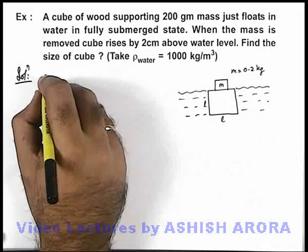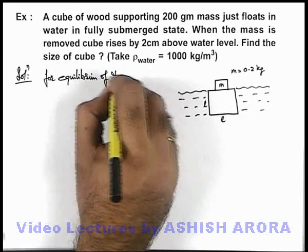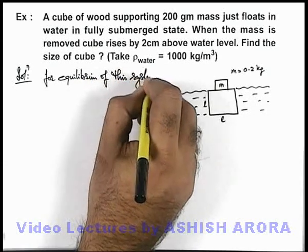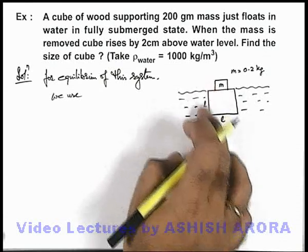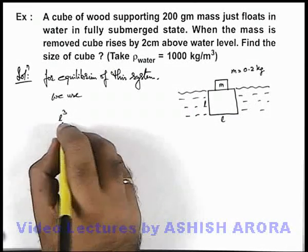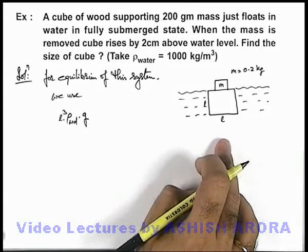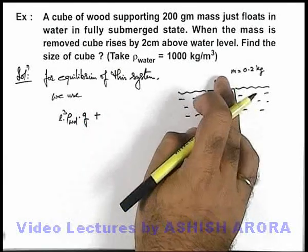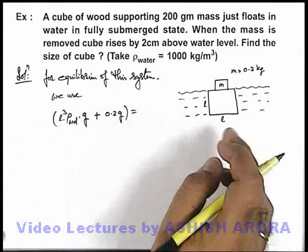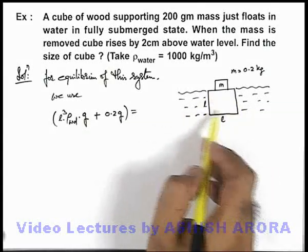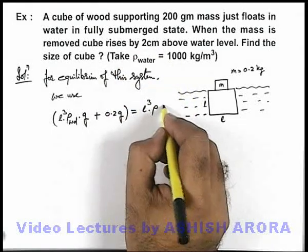For equilibrium of this system, we write: the weight of the wooden block is L cubed multiplied by density of wood multiplied by g. Adding the weight of the mass, which is 0.2g, this total weight is balanced by the buoyant force — the weight of water displaced by the cube — which is L cubed multiplied by density of water (ρ) multiplied by g.